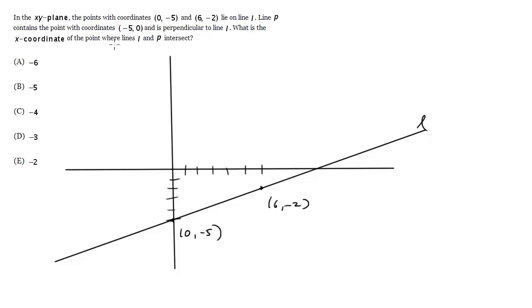Now what about line P? It contains the point with coordinates negative 5, 0. So 1, 2, 3, 4, 5. Here is negative 5, 0. And it's perpendicular to line L, so that means it intersects line L forming a right angle.